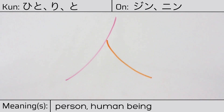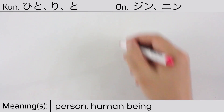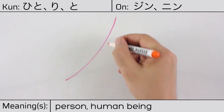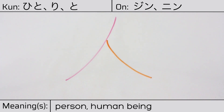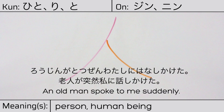You can remember this kanji by thinking of it as looking like a person, if you draw a stick figure with arms and a head. Our example sentence is: 老人が突然私に話しかけた — An old man spoke to me suddenly.